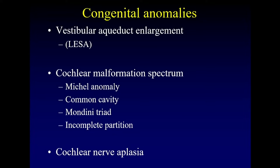At one end is the Michel anomaly, the most severe version, where there is nothing — it's just all white where the cochlea and vestibule should be. A little less severe is the common cavity, where there's just one big hypodense blob where the cochlea and vestibule should be. Then there is an extensive area we call cochlear vestibular anomalies, until we reach Mondini's triad, which has three very specific abnormalities: the upper turns of the cochlea, the lateral semicircular canal, and the vestibular aqueduct. At the mildest end is the incomplete partition, where the bony septa between the upper turns of the cochlea are missing. Some of those patients are asymptomatic, it's so mild.